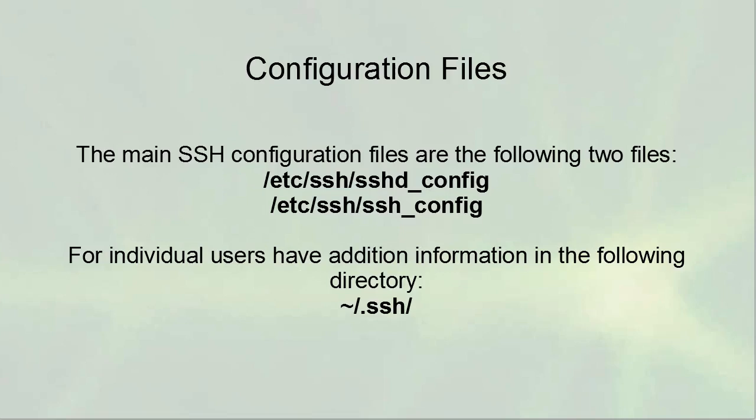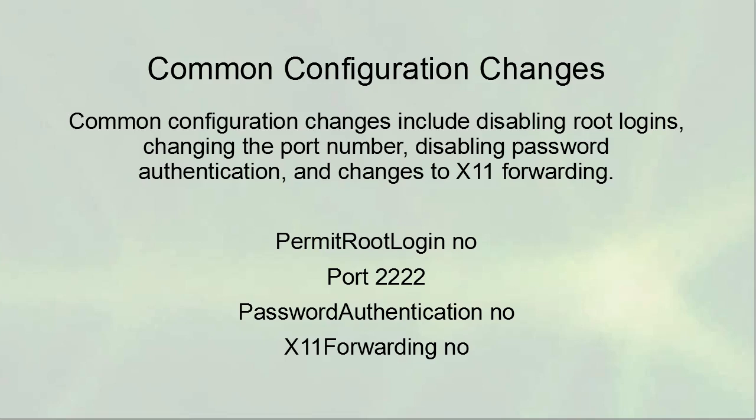When configuring SSH, the main configuration files are /etc/ssh/sshd_config for the server and /etc/ssh/ssh_config for the client. Individual users can also have additional override-type configuration for their clients in the .ssh directory of their home directory.